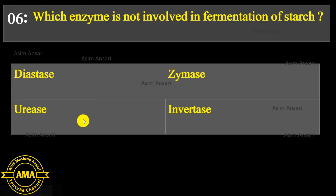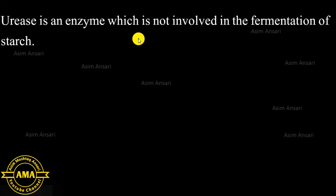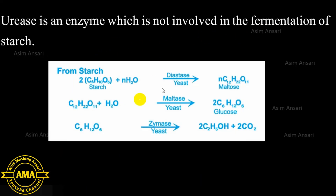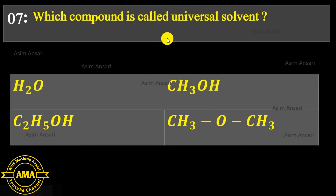Next MCQ: Which enzyme is not involved in fermentation of starch? Options: diastase, zymase, urease, or invertase. Urease is the enzyme not involved in the fermentation of starch. As shown in the equation, diastase, maltase, and zymase enzymes are used in the fermentation of starch. The exact answer is urease.